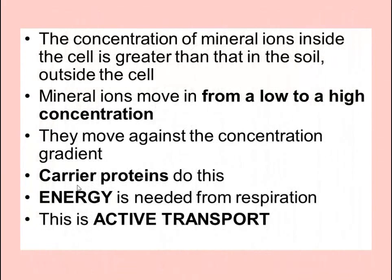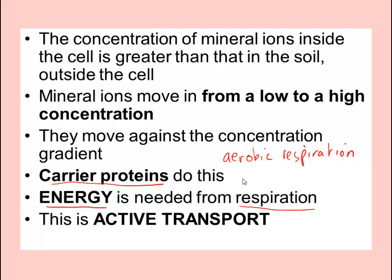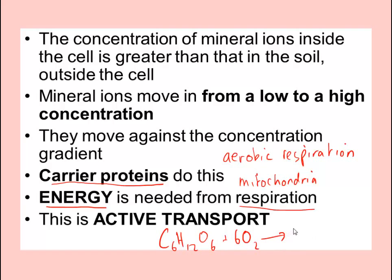Next, let's think about how they do it. There are two requirements: number one, carrier proteins, and number two, energy. That energy is going to come from respiration — specifically aerobic respiration, which occurs in the mitochondria. The equation for aerobic respiration is: C6H12O6 + 6O2 → 6CO2 + 6H2O. Remember that equation.